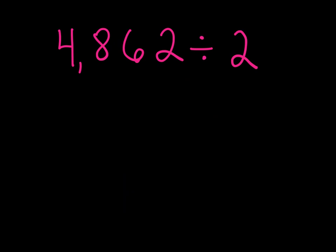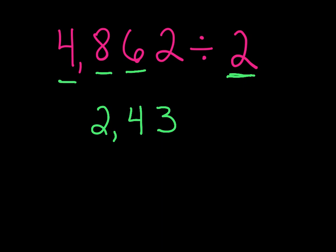Now going back to the same problem, 4,862 divided by 2 — just by looking at this, you could do it mentally. 2 goes into 4 two times, 2 goes into 8 four times, 2 goes into 6 three times, 2 goes into 2 one time: 2,431. They're all even numbers, so they're all divisible by 2. Look how fast that was.